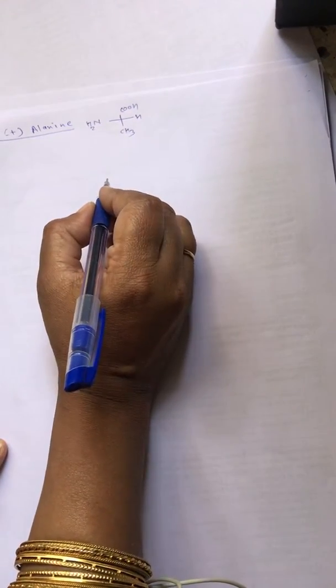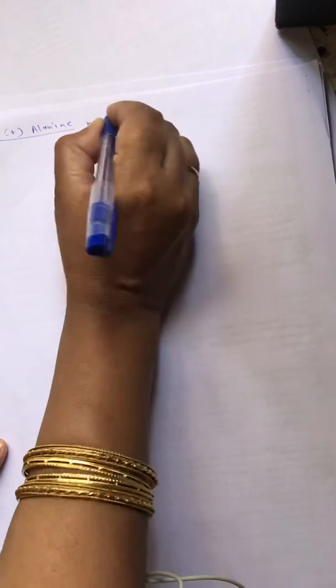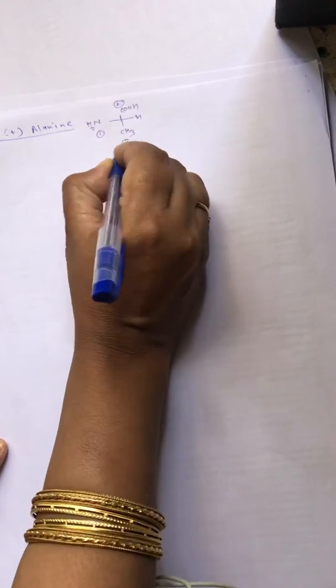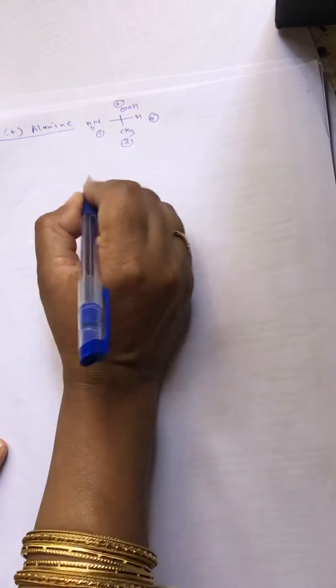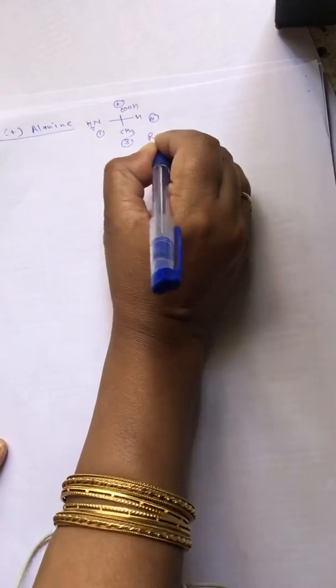Let us find out the configuration. Assigning priorities 1, 2, 3, and 4, it goes clockwise, so it has to be S configuration.